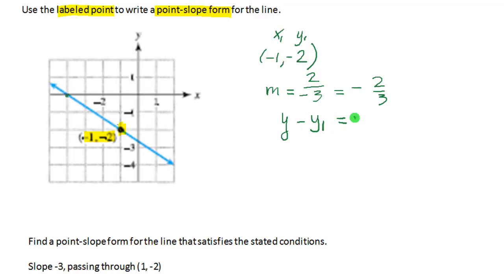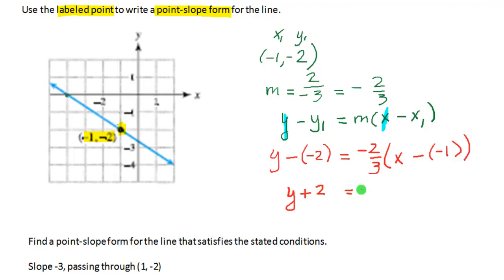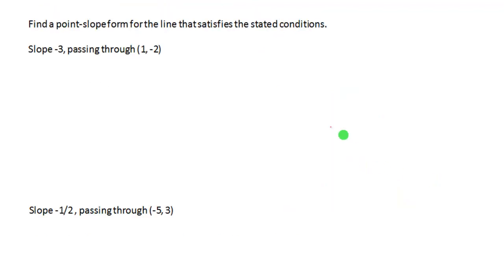Now we substitute into our point slope form. Remember y and x in this formula are variables, so you keep those as part of your equation. So y minus y1, where y1 is negative 2, equals m, which is negative 2 thirds, times x minus x1, where x1 is negative 1. We simplify the two negatives to a plus, giving us the point slope form for the line.